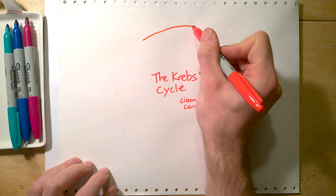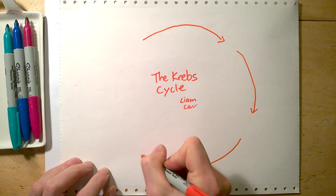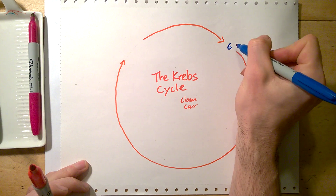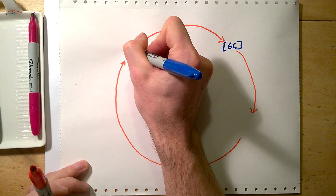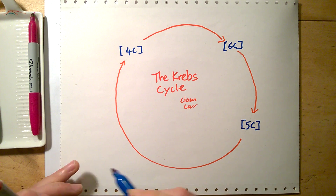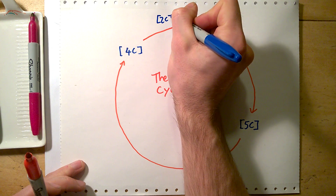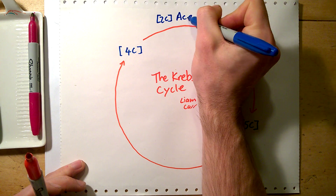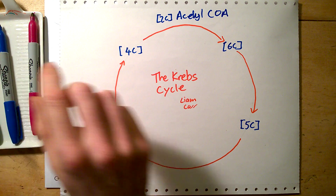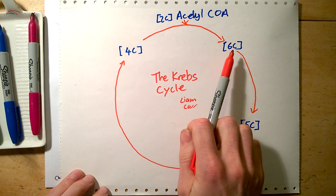The Krebs cycle, unsurprisingly given the name, is a cycle involving carbon compounds — a six-carbon compound, a four-carbon compound, and a five-carbon compound. To keep that cycle going, you add in two carbon atoms, which come from an acetyl group carried on CoA — in other words, acetyl CoA. It's the acetyl group we're interested in; it enters the Krebs cycle and makes that four-carbon compound into a six-carbon compound.